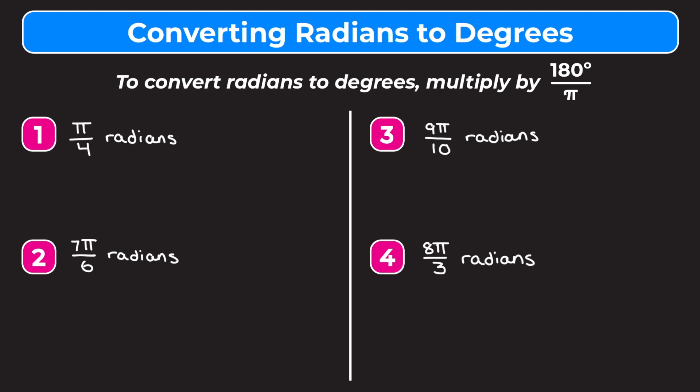If you look at the top of the screen, it says to convert radians to degrees you're going to multiply by 180 degrees over pi. This is because 180 degrees is equal to pi radians. So because they're equal, when you multiply by 180 degrees over pi you're really multiplying by one, and if you multiply anything by one it just stays the same.